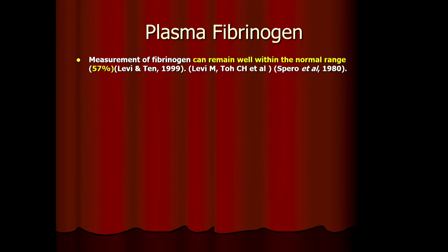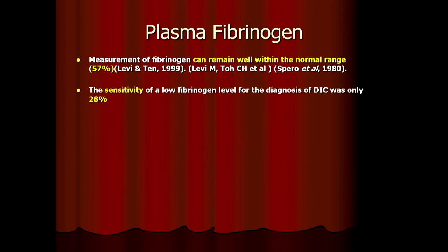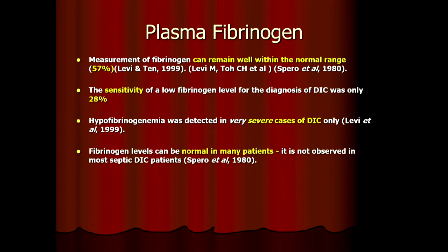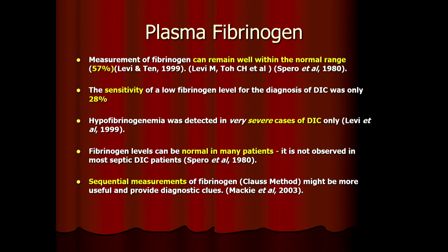Fibrinogen is another molecule we can test, but it can remain in the normal range in almost 60% of DIC patients. The sensitivity is as low as 20-28%. By the time fibrinogen drops, the patient is already in severe DIC. In sepsis patients especially, the fibrinogen may never drop — it may remain normal, perhaps dropping from 430 to 280 but still in normal range. Don't be fooled by it. Sequential measurements — the trend — are more important than just one value.